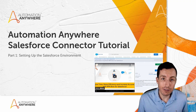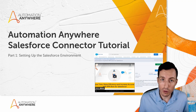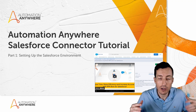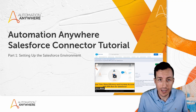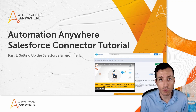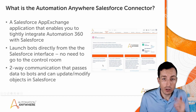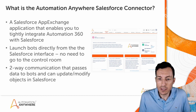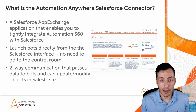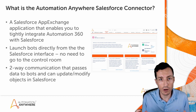This is the first video in a series on the Automation Anywhere Salesforce connector. This is a tutorial series covering how you can set up the Salesforce connector for Automation Anywhere. It's available in the Salesforce AppExchange and you can install it directly from AppExchange, then configure it to integrate directly with your Automation 360 control room.